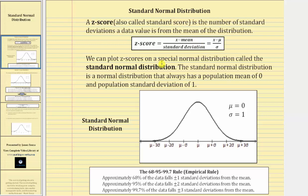We can plot z-scores on a special normal distribution called the standard normal distribution. The standard normal distribution is a normal distribution that always has a population mean of zero and a population standard deviation of one.